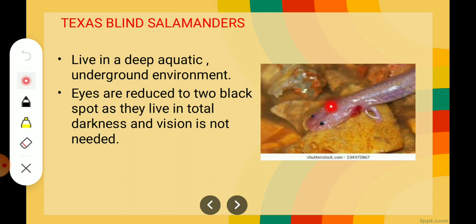Then Texas blind salamanders. You can see these are pink, snake-like structures. They live in a deep aquatic underground environment, and their eyes are reduced to black spots — you can see there are two black spots. As they live in total darkness, vision is not needed. So deep in the underground waters where it is totally dark, they cannot see anything, eyes are not needed, and their eyes have been reduced to black spots.